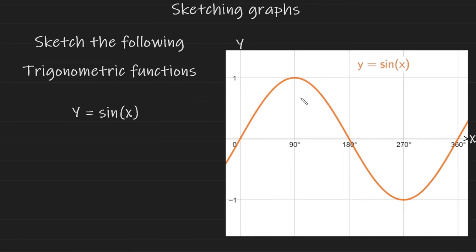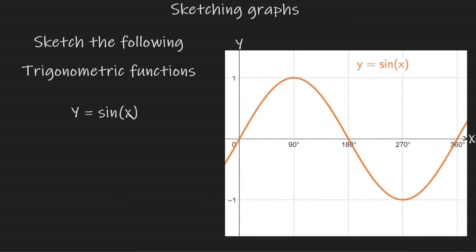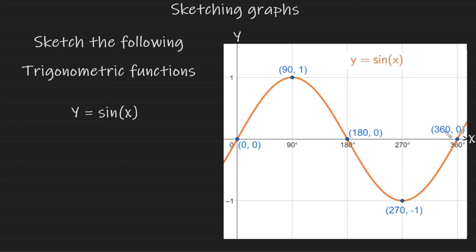Now we're going to look at trigonometric functions, starting with y equals sine of x. The input value is an angle in degrees, so the x-axis shows degrees. For every 90 degrees something happens: at 90° the y-value is 1, at 180° it's back to 0, at 270° it's minus 1, and at 360° it returns to 0. The graph then repeats itself forever in both directions. Commit to memorizing how to sketch it and its important points.